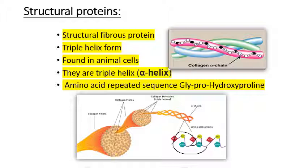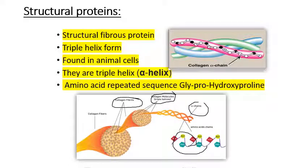Three alpha chains combine to form the collagen molecule, and these collagen molecules form collagen fibrils. All of these help in the holding of the cells.